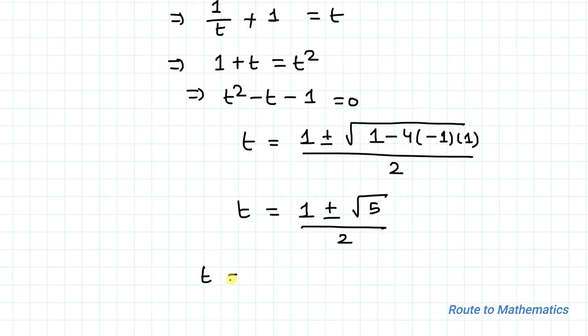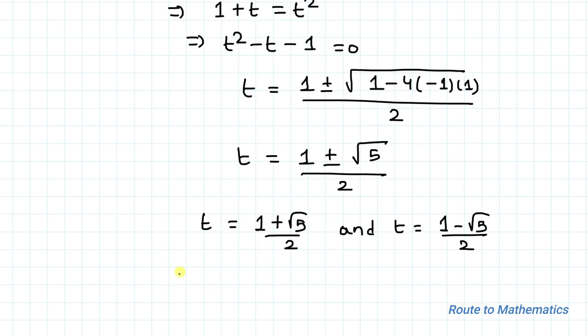So t = y/x = (1 + √5)/2, and y/x also equals (1 - √5)/2. This is our answer.